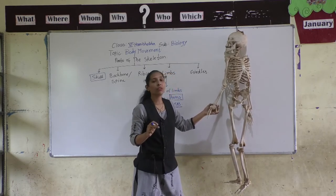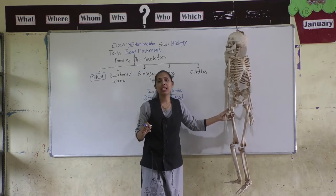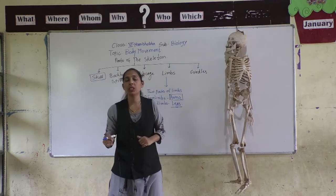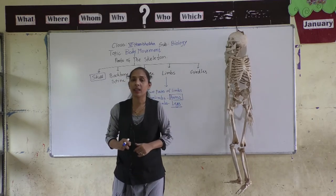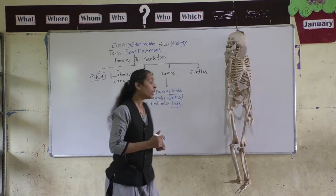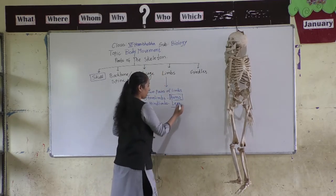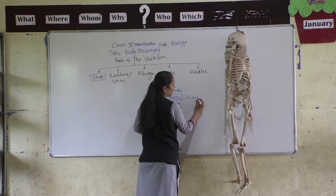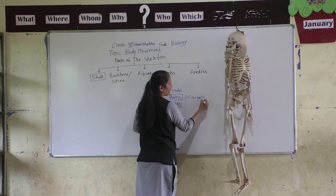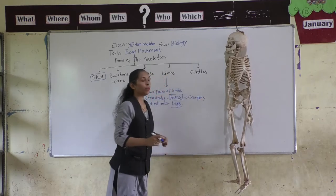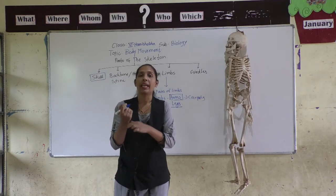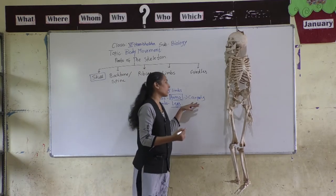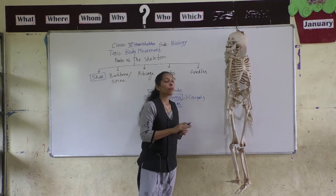In our wrist there are eight bones, and they are called Carpals. Our wrist is made up of eight bones called carpals.